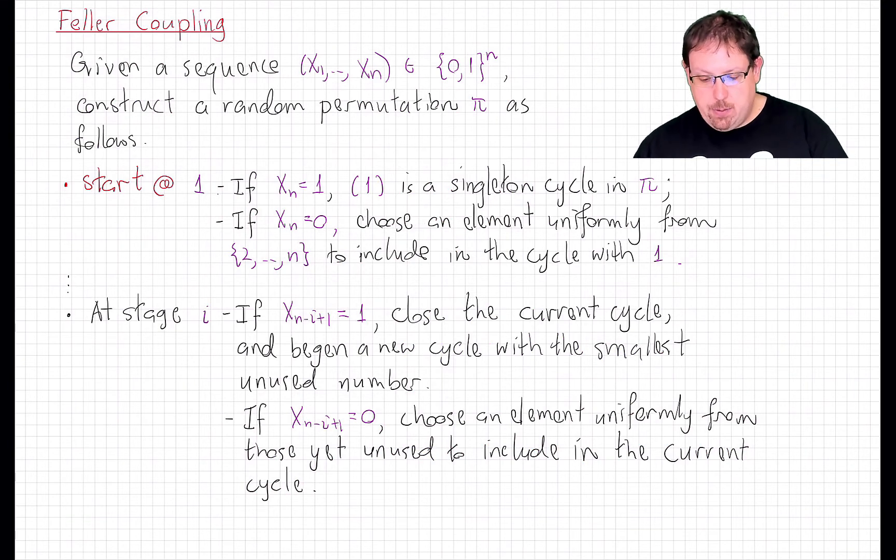Given a sequence of zeros and ones, any sequence, we can construct from that a random permutation. Now, let's be clear. I don't mean to say that there's a function from such sequences to all permutations, because the set of all such sequences has size 2 to the n, which is much smaller than n factorial, the size of the set of all permutations. This is not a deterministic procedure. Given such a sequence, I'm going to construct a permutation that still is random in its construction. And here's how we do it.